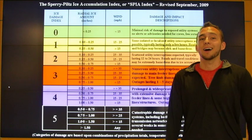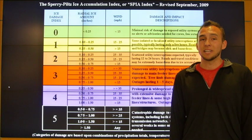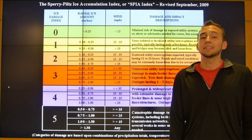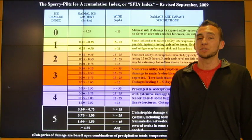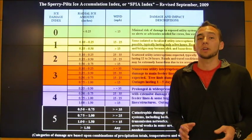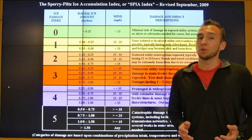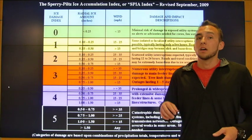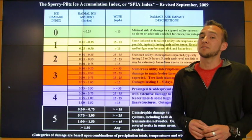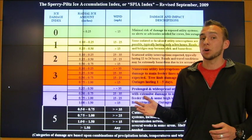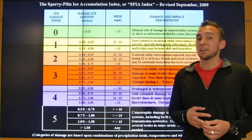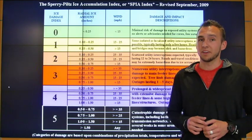This is the Sperry Pilt's Ice Accumulation Index. This index categorizes the severity of ice storms based on the amount of damage the storm produces. The index takes into account total wind speeds and ice accumulation on surfaces such as power lines and trees. Index values of zero are the least severe events, while index values of five are the most catastrophic events.